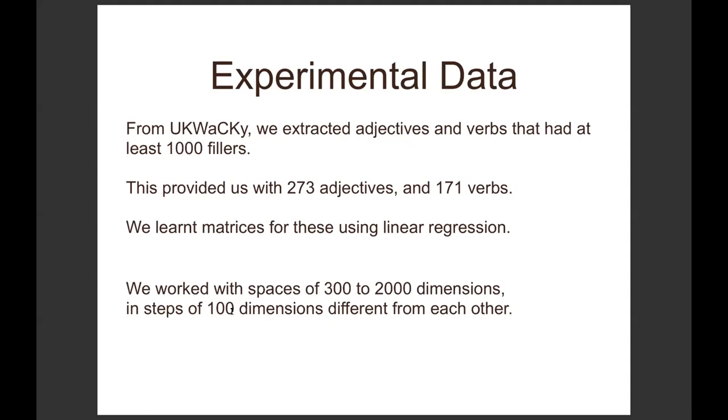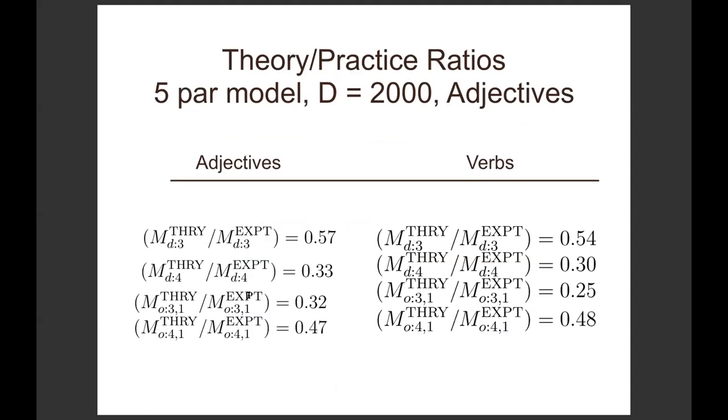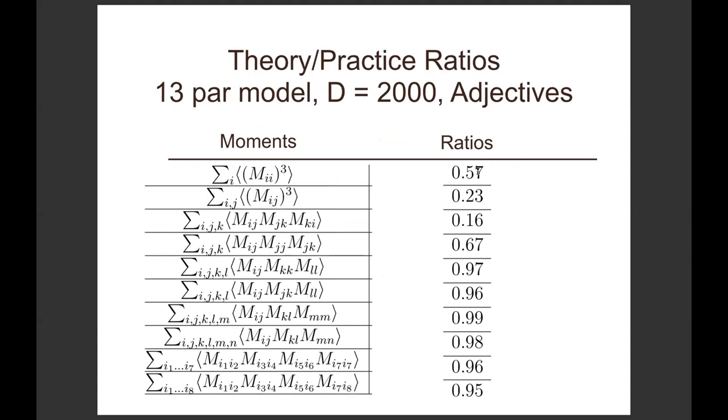If you look at the five-parameter model, just look at the differences between the theory and experiment. The highest one is 0.57, still above chance but quite low. It says that the theory and the experiment don't match each other very well. You want this to be one. But when we went to the 13-parameter model, surprisingly, have a look here: the higher order moments have an average accordance between 0.95 and 0.99. So the theory and experiment match really well here. This is for 2000-dimensional space for adjectives.